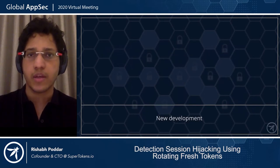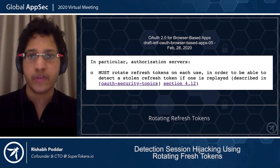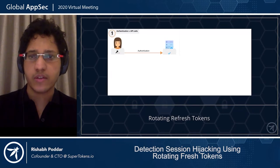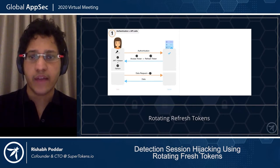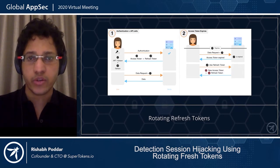That's where rotating refresh tokens comes into the picture. This is also recommended by one of the latest OAuth RFCs, which states that for browser-based apps we must use rotating refresh tokens since it detects session hijacking. The way it works is that the user authenticates to the server, and the server returns an access token and a refresh token. The access token is short-lived; the refresh token is long-lived. The access token is used for every API call, and when it expires the API calls will fail. We can then use the refresh token to get a new set of tokens and continue the session using the new access token.